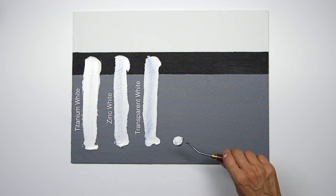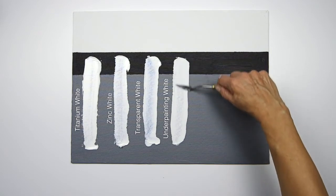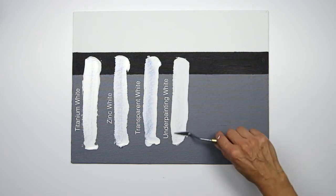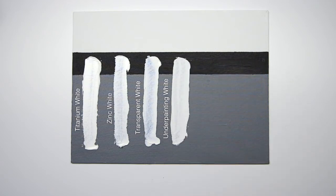And here we have underpainting white which may not be so noticeably different from some of the other whites but it certainly is in its drying speed. It's much faster and therefore very good for underpainting.